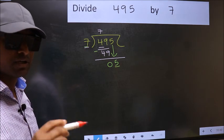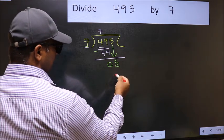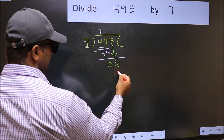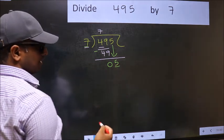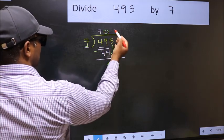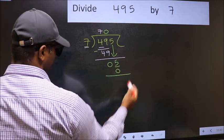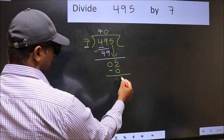Instead, what you should think of doing is, what number should we take here? If I take 1, we will get 7, but 7 is larger than 5. So what we should do is, we should take 0. So 7 into 0, 0. Now you should subtract. 5 minus 0, 5.